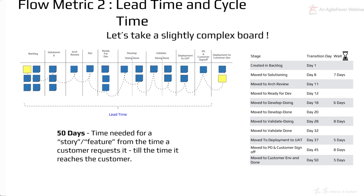Let's look at lead time in a slightly complex board. You have this yellow sticky that moves from the backlog to solutioning, from solutioning to architecture review, from there to proof of concept, from there to ready for development, then jumps to development doing, development done, validation doing, validation done, development deployment to UAT, product owner and customer sign off, and deployment to customer development environment.